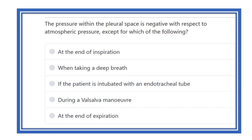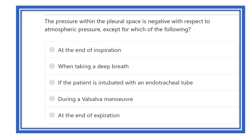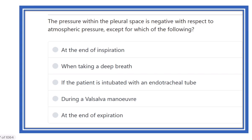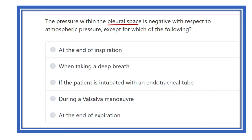Hi everyone, welcome to another video lecture on physiology. The pressure within the pleural space is negative with respect to atmospheric pressure — except for which of the following? So pleural space pressure is normally negative, but we have to find out the condition in which the pleural space pressure is not negative, that means positive.